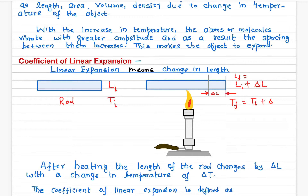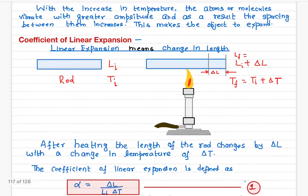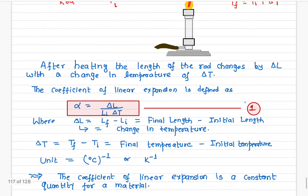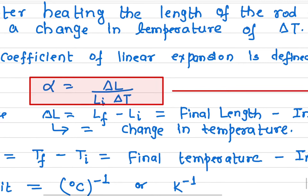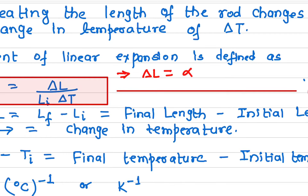The temperature change is delta T. We need a relation between the initial length and the final length — specifically, what is the change in length. The coefficient of linear expansion, denoted by alpha, is defined as the change in length divided by the original length and divided by the change in temperature. From this, the change in length delta L equals alpha times the original length times the change in temperature.